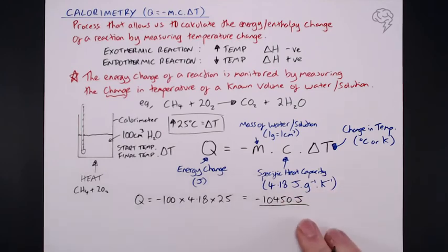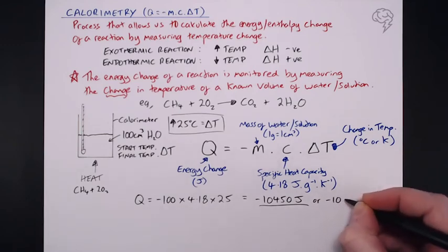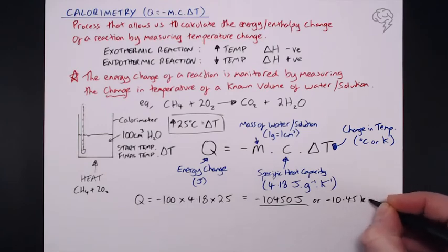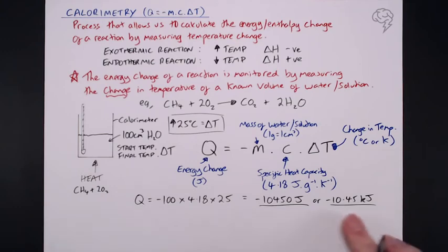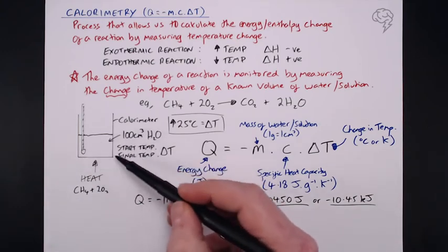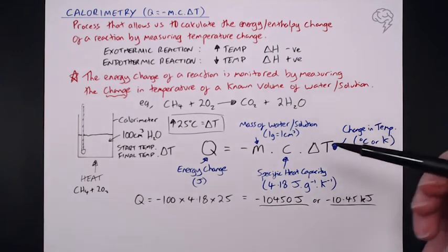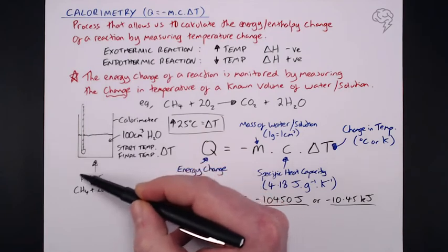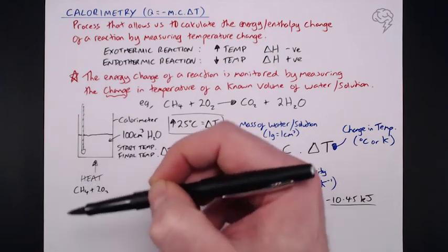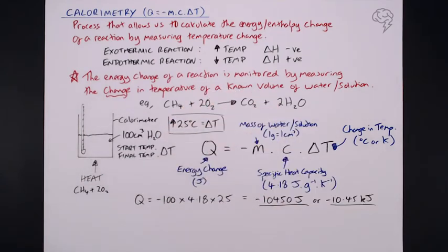I've put that into a calculator already, and what we have here is minus 10450 joules. Now, our answer is in joules, really important, because of the specific heat capacity being in joules. So, this is basically 10,450 joules, or indeed, we can divide that by 1,000 to get minus 10.45 kilojoules. So, usually, they would want the answer in kilojoules there. So, this is how much energy it took to heat 100 centimetre cubed of water by 25 degrees Celsius. Essentially, that's how much energy our methane reacting with oxygen released to cause that increase in temperature.